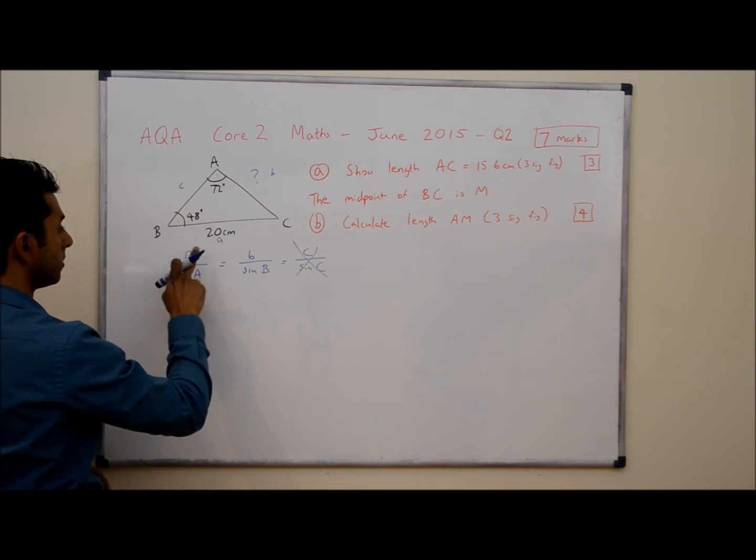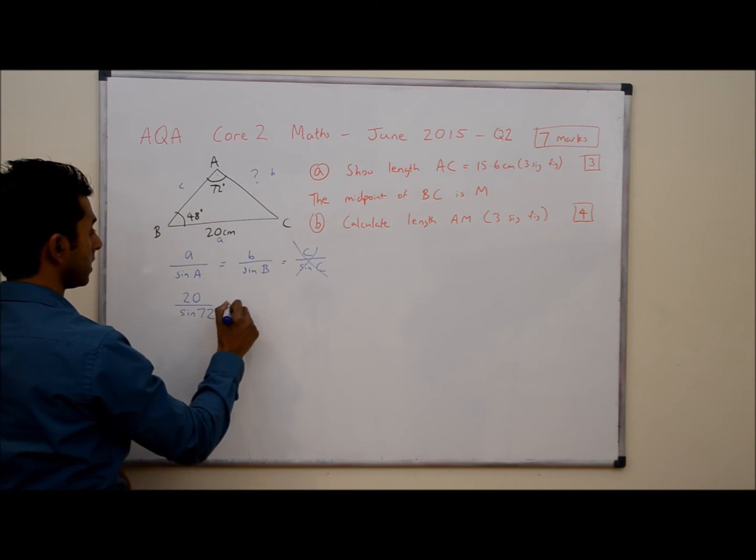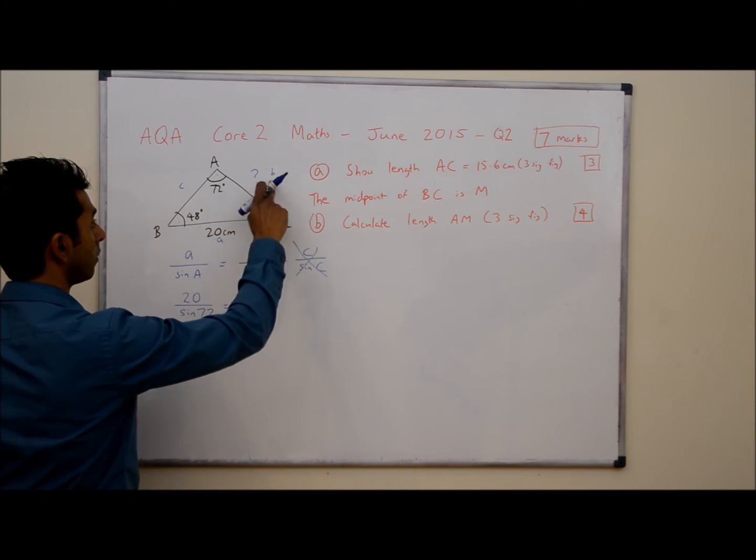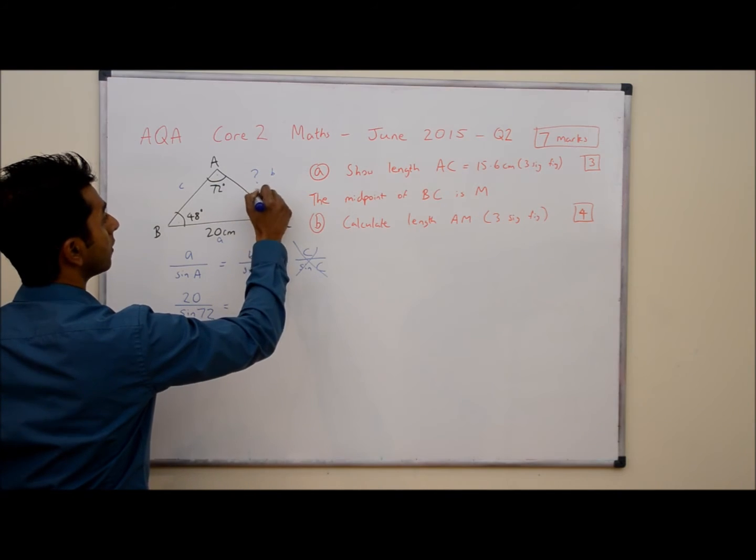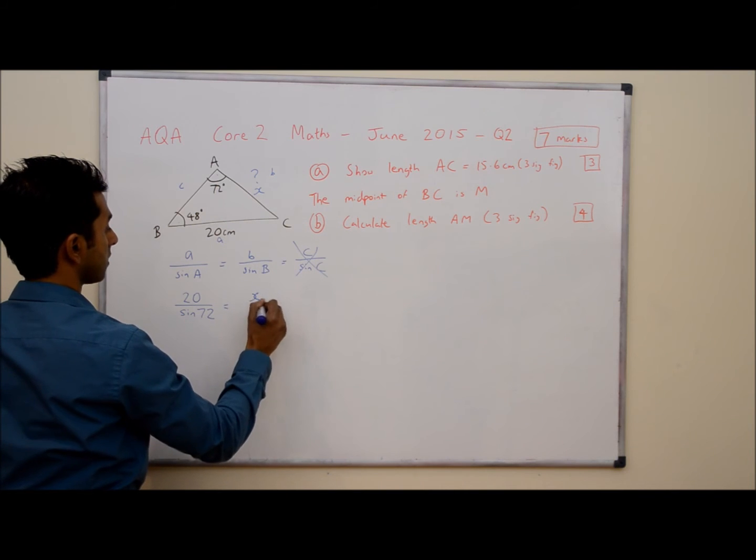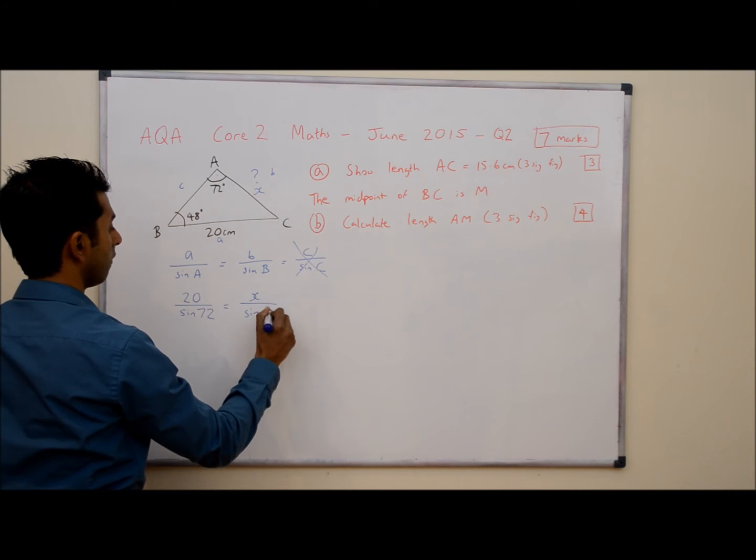Let's substitute numbers in. Little a is 20 divided by sine A which is 72 and that's equal to B which we don't know, so I'm just going to call it x because we've not got any other letters. So x over sine B, that's sine 48.